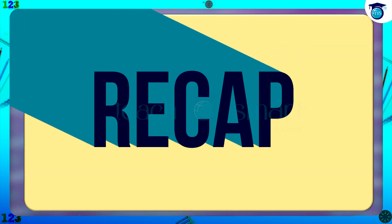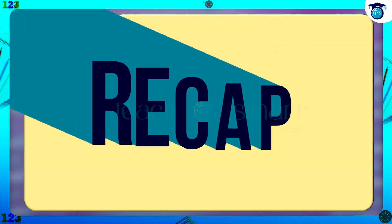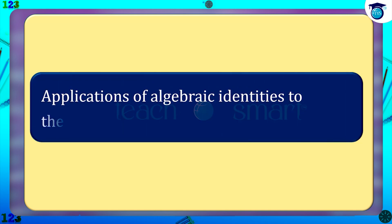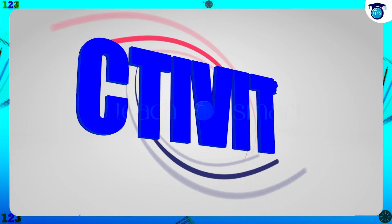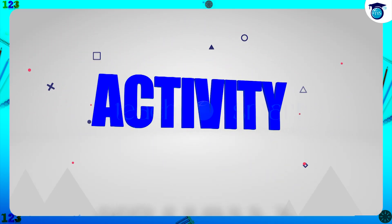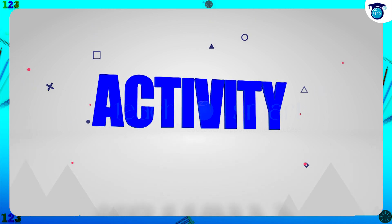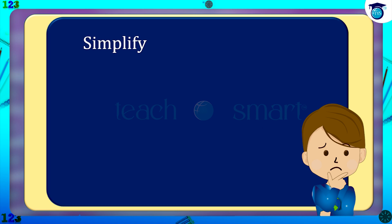Let's recall what we discussed today: the applications of algebraic identities to the square roots. Before winding up, let's check how much you understood by doing an activity. Simplify: First, (√3 + √6) the whole square.